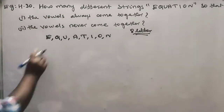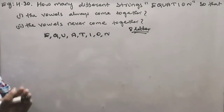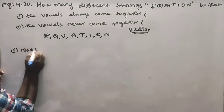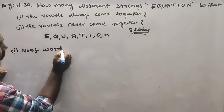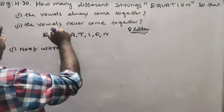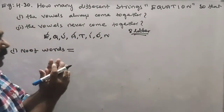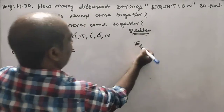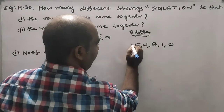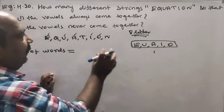First condition: the vowels in the word always come together. The vowels are E, U, A, I, O — that's 5 vowels. When vowels come together, we consider these 5 letters as one single unit.